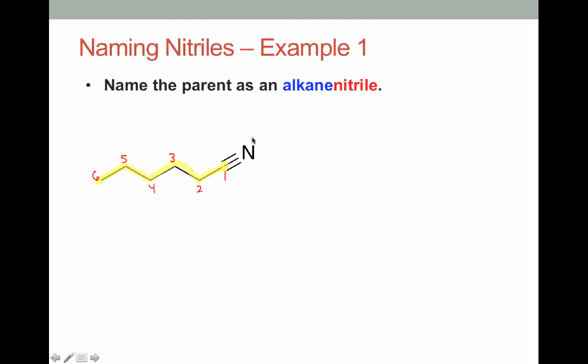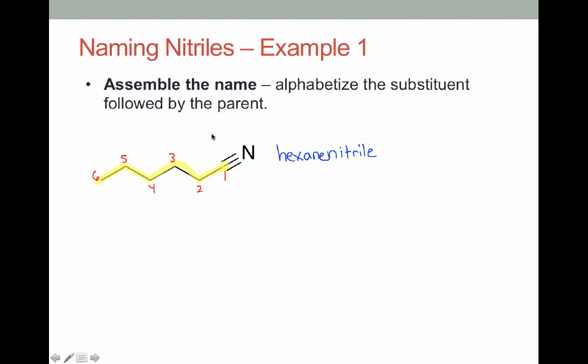So in this case we have a 6 carbon parent chain. Now we name it as an alkanenitrile. So here we have 6 carbons. That comes from hexane. So our parent name is hexanenitrile. From here we would number and identify any substituents, but in this example we don't have any substituents to worry about. And then finally, assemble the name. Since there's no substituents to put in place, we're just left with our name as hexanenitrile.